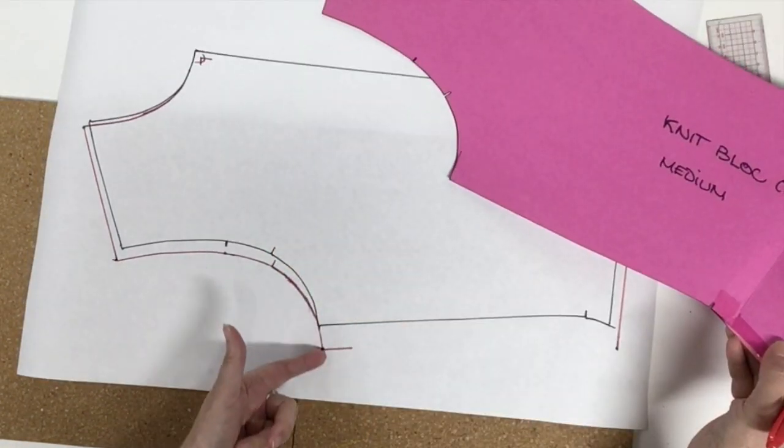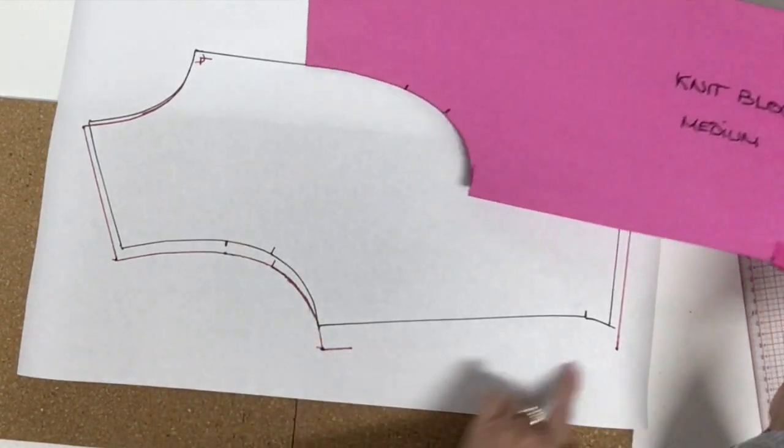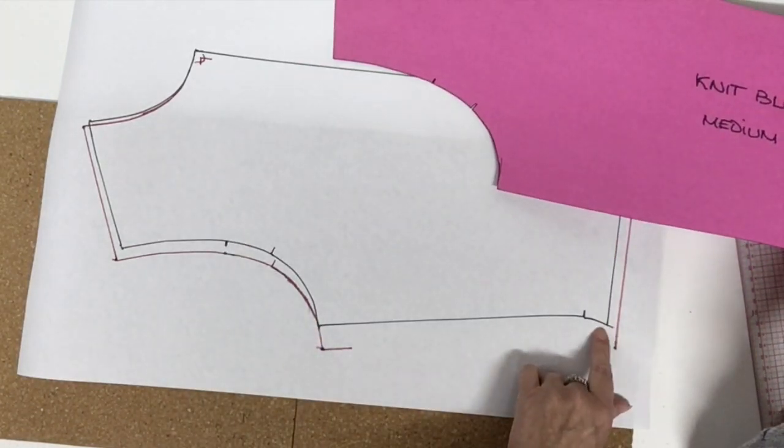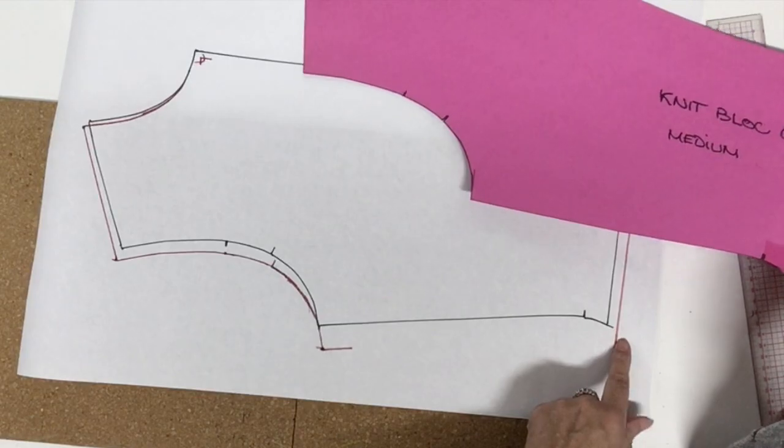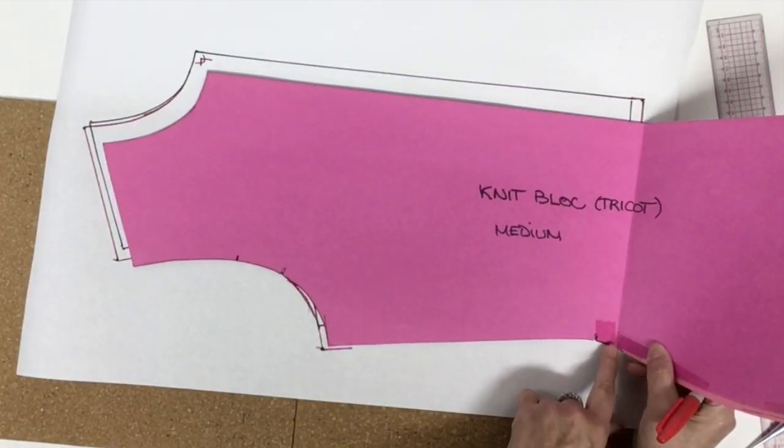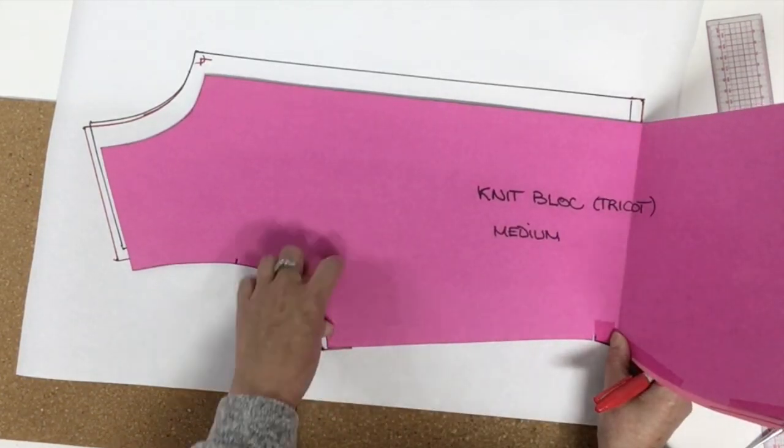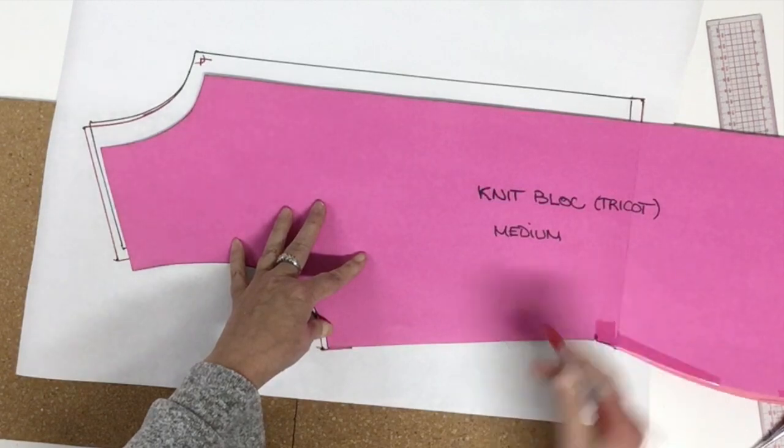Now I guess you noticed that I did trace a little bit the angle. So even if my bigger size graded down a little, got longer, I will be able to place my block right on at the bottom and touch the angle so I could trace my side seam.